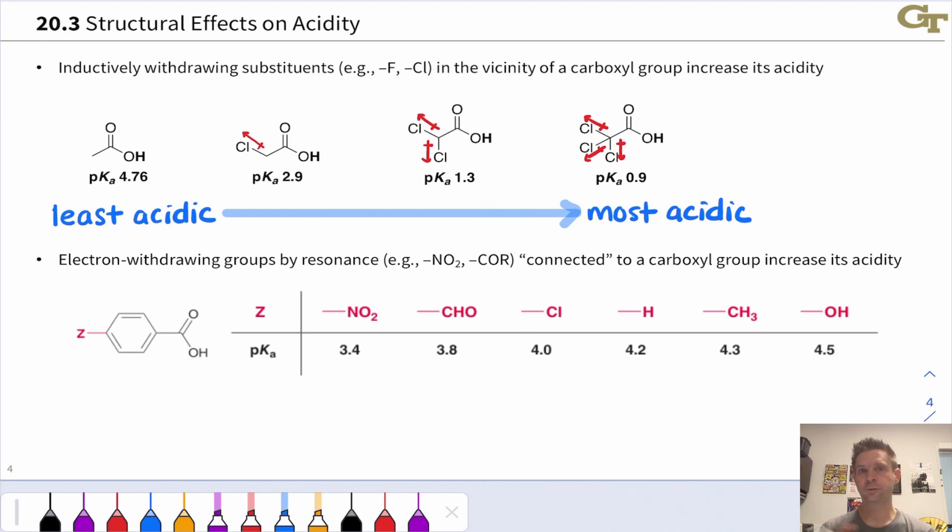Here we have a series of para-substituted benzoic acids where Z is either an electron donating or withdrawing substituent. If Z is electron withdrawing, we see that the acid is quite a bit more acidic. The NO2 substituted benzoic acid is the most acidic in this series. As the electron withdrawing strength goes down,